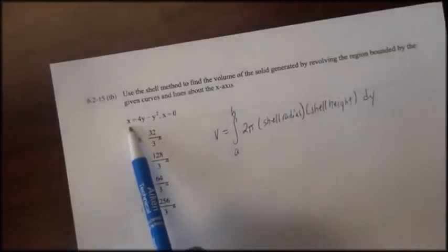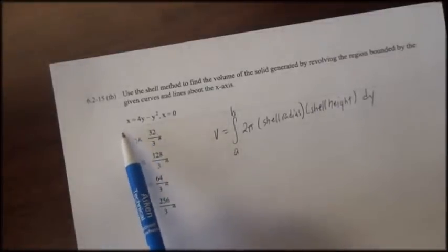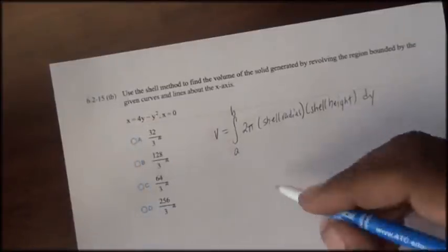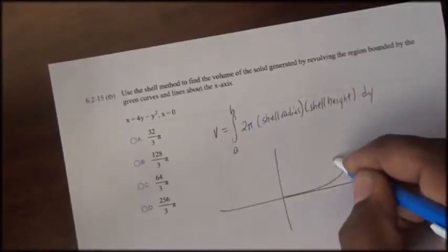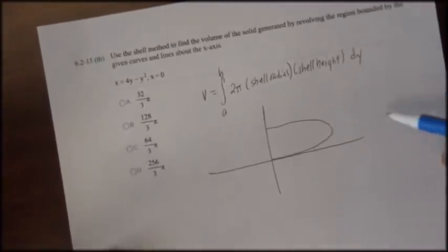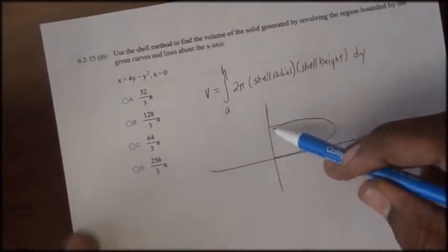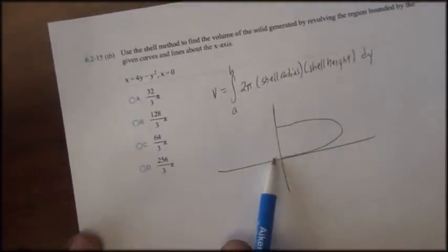We also need to sketch a rough graph of the function. If you graph the function x equals 4y minus y squared, you'll see that the graph of that function is similar to this. Our limits are on the y-axis, so in order to find those limits, we'll find the y-intercepts.